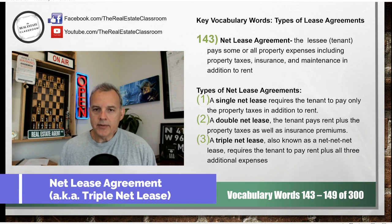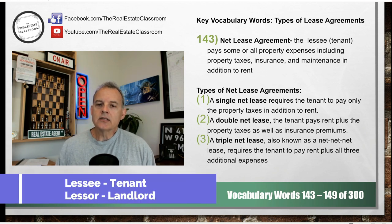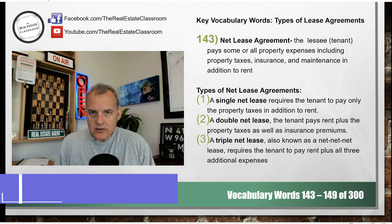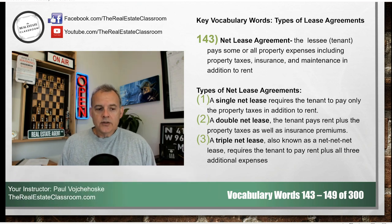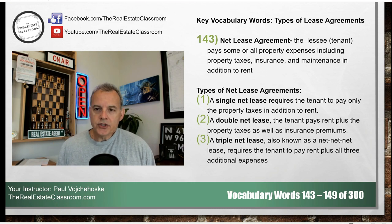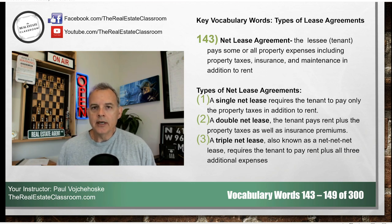A net lease agreement is where the lessee — remember, the lessee is the tenant — pays some or all of the property's expenses that they're leasing out. This includes property taxes, property insurance, and maintenance of that property, in addition to any monthly or periodic rent that they're required to pay.